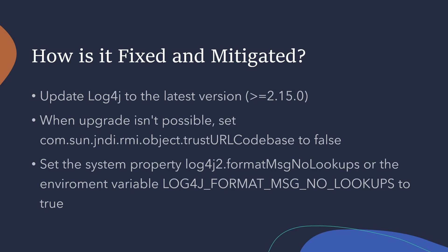So how is this actually fixed and mitigated? The best answer is to update log4j to the latest possible version, which at the time of making this video is 2.15.0. Please make sure to look up the proper fixes and mitigations because information may change by the time you see this — there's new information coming out constantly. The current best advice is to always update to the latest version. If you can't upgrade, you should set com.sun.jndi.rmi.object.trustURLCodebase to false, which should effectively stop this vulnerability.